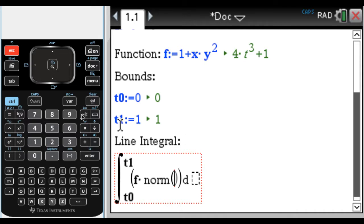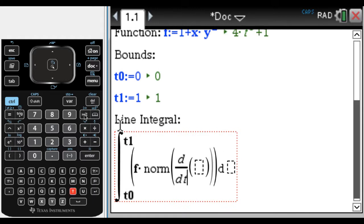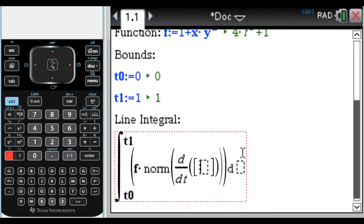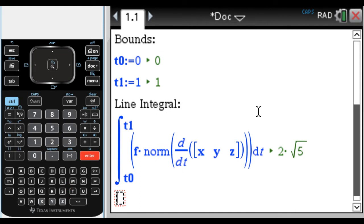So I need the norm of the derivative. So it's kind of complicated, but you only need to do it once. So a derivative with respect to T of, I need the vector, so it's control, and then open parentheses gives me these brackets, and then X comma Y comma Z. That's R. I'm going to take the derivative of that. In there is R prime, I'm finding the norm of that. And then I'm going to integrate with respect to T, and press enter, and it just spits out the answer.